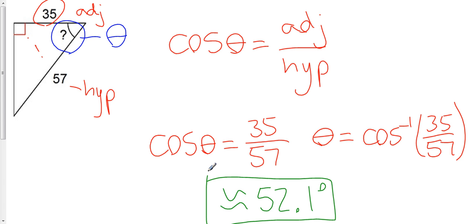And that is how you determine a missing angle in a right triangle when you're given at least two of these sides.